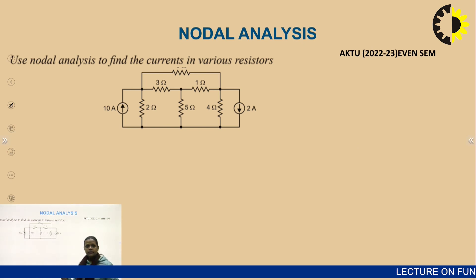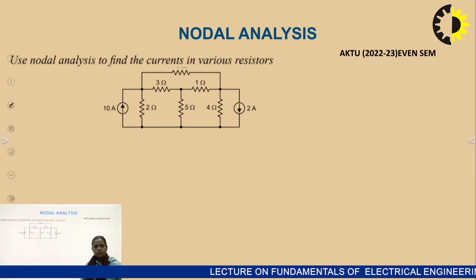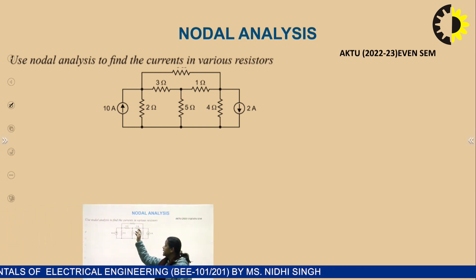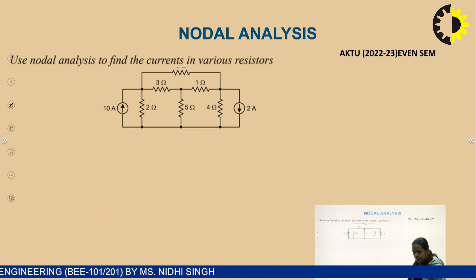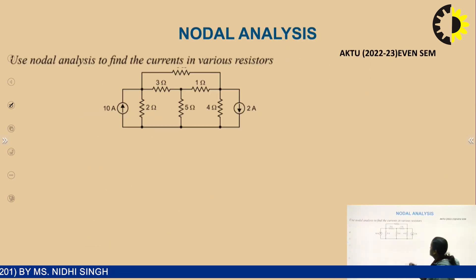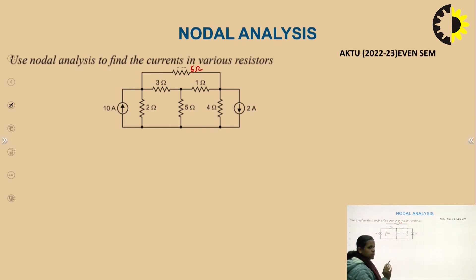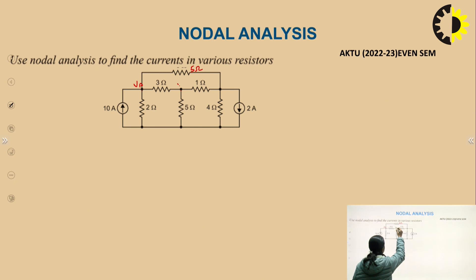This example is from the AKTU previous year question paper, 2022-23. In this question, you have to use nodal analysis to find current in various resistors — you have to find current in each branch. There are 5-ohm resistors here. The first step is to identify the number of major nodes. There are 3 nodes: the node voltages are VA, VB, and VC.